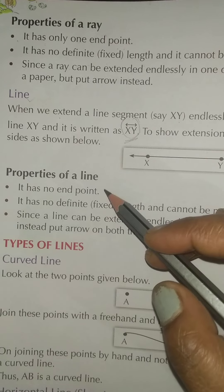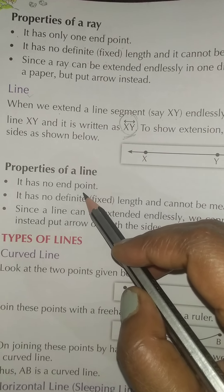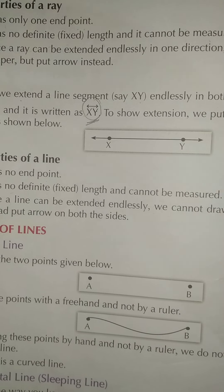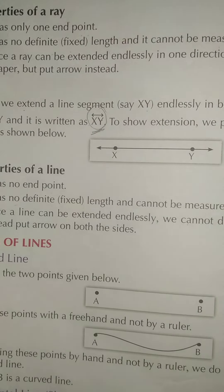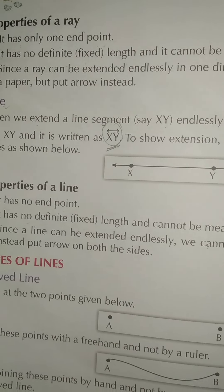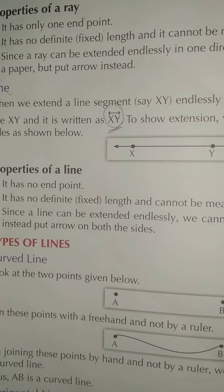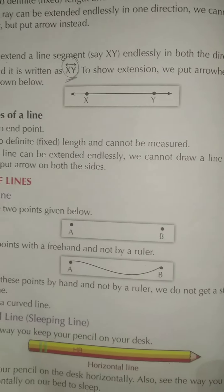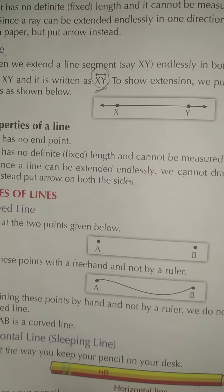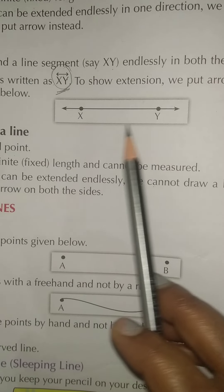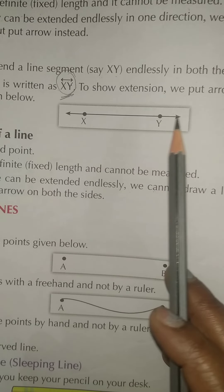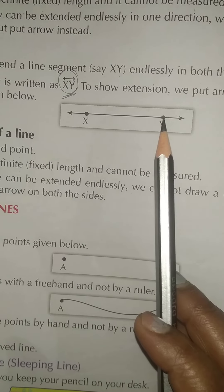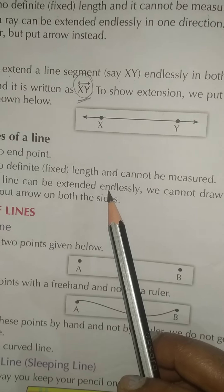Now the properties of line. It has no end point. It has no definite length and cannot be measured — same as a ray, which also cannot be measured. Number three — since a line can be extended endlessly, we cannot draw a line on a piece of paper. Instead, we put an arrow on both sides, because the line extends in both directions.